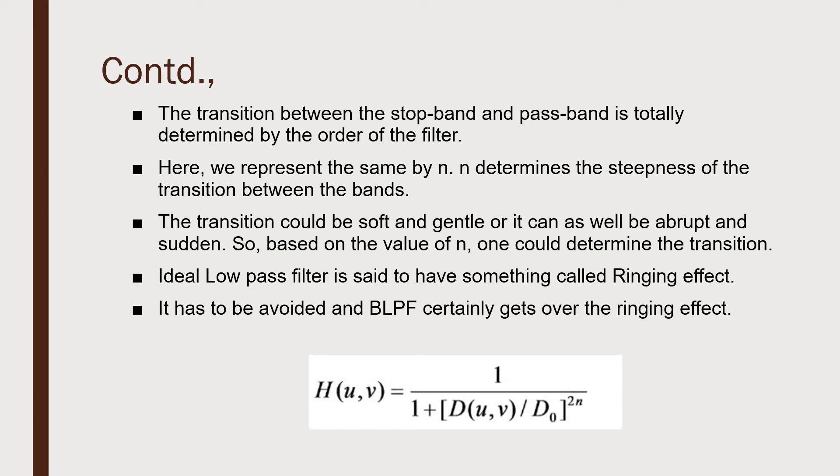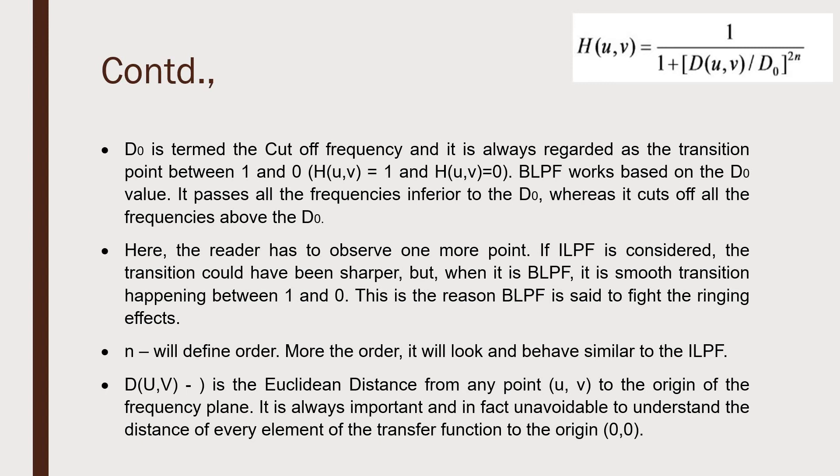You've got the transfer function: H(u,v) equals 1 divided by 1 plus [D(u,v)/D0] raised to the power 2n. Now we need to understand these components. D0 is called the cutoff frequency and is always regarded as the transition point between 1 and 0. BLPF fundamentally works based on that D0 value and it passes all values less than D0, whereas it cuts off all frequencies above D0.